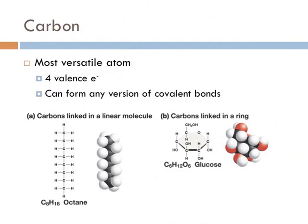Carbon is a really cool atom. It's considered the most versatile atom that exists. It has four valence electrons and is the smallest atom with four valence electrons. It can form any version of covalent bonds: single bonds, double bonds, triple bonds. They can be linked in linear models like octane or linked into rings such as glucose and any other form of structures. So it's very versatile, and it's really one of the key components as to why carbon is so essential to life.